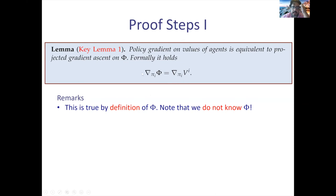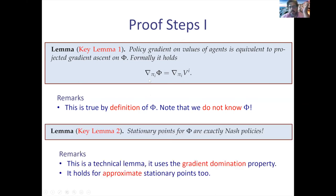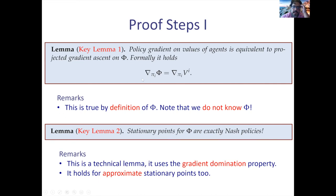This result follows from the definition of φ — you can use the defining equation to show that the gradients of φ equal the gradients of the utilities. Intuitively, running policy gradient iteration on the utilities is essentially the same as doing gradient ascent on the function φ. So to analyze policy gradient for Markov potential games, it suffices to analyze gradient ascent on φ.